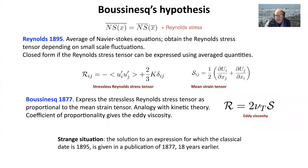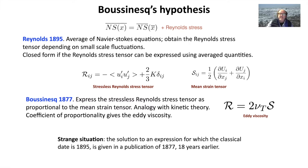In the field of turbulence modeling, there is a strange historical situation: people use a closure proposed by Boussinesq in 1877 to solve a problem that was posed by Reynolds averaging of the Navier-Stokes equations, published in 1895. So the publication order is quite inverted. To understand this better, I went to the original sources.